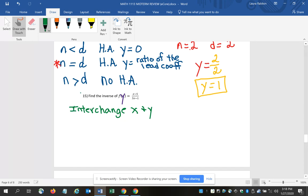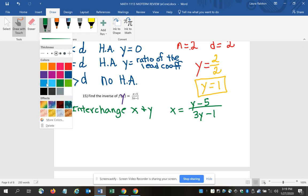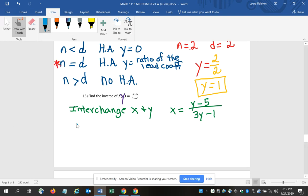So when I rewrite this problem, I have x equals y minus 5 over 3y minus 1 – wherever there was a y, I've put x – wherever there was an x, I've put y. Now the second step in this process then is to solve for y.